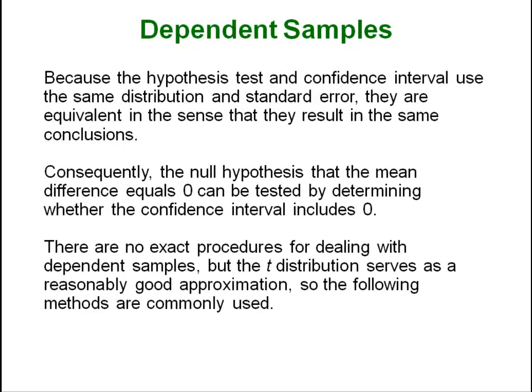Because our hypothesis test and our confidence intervals use the same standard distribution and standard error, they are equivalent in the sense that they result in the same conclusions when we are dealing with dependent samples. So consequently the null hypothesis that the mean differences are zero, there is no difference between the two, can be tested by determining whether or not the confidence interval actually includes zero.